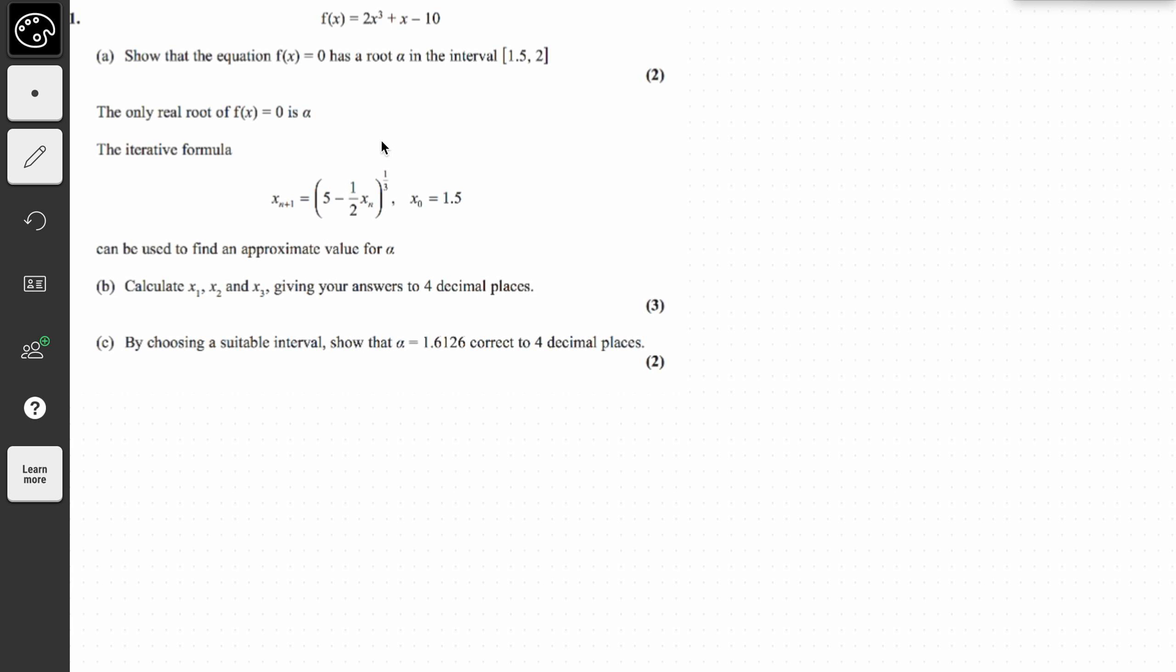So this is simple. We can just find f(1.5) first of all. So it's 2(1.5)³ + 1.5 - 10, and that gives us -1.75. And f(2) would be 2(2)³ + 2 - 10, and that gives us 8.